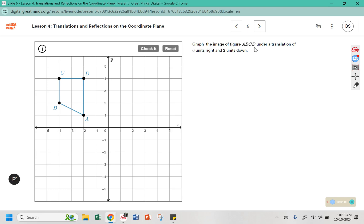Graph the image of figure ABCD under a translation of six units right and two units down. So I'm going to go six to the right, one, two, three, four, five, six, and two units down. Same for point A, one, two, three, four, five, six, and down two. One, two, three, four, five, six, down two. And then it says check it. And we're in the correct spot.